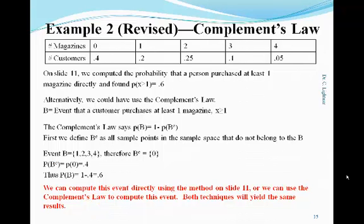Let's revisit the telemarketing example again. On slide 11, we computed the probability that a person purchased at least one magazine directly and found that P(X ≥ 1) = 0.6. Alternatively, we could have used the complement's law. The complement's law is particularly useful whenever the vast majority of sample points are contained in the event itself and there are only a few sample points not in the event. Using the complement's law, if B is the event that a customer purchases at least one magazine, then the probability of B equals 1 minus the probability of the complement of B.